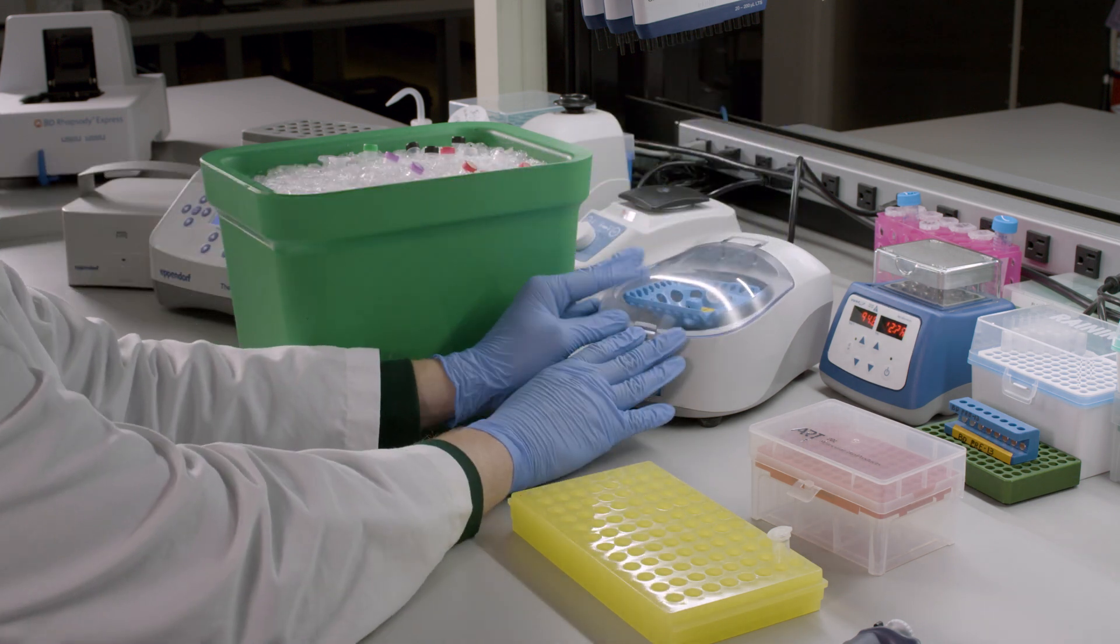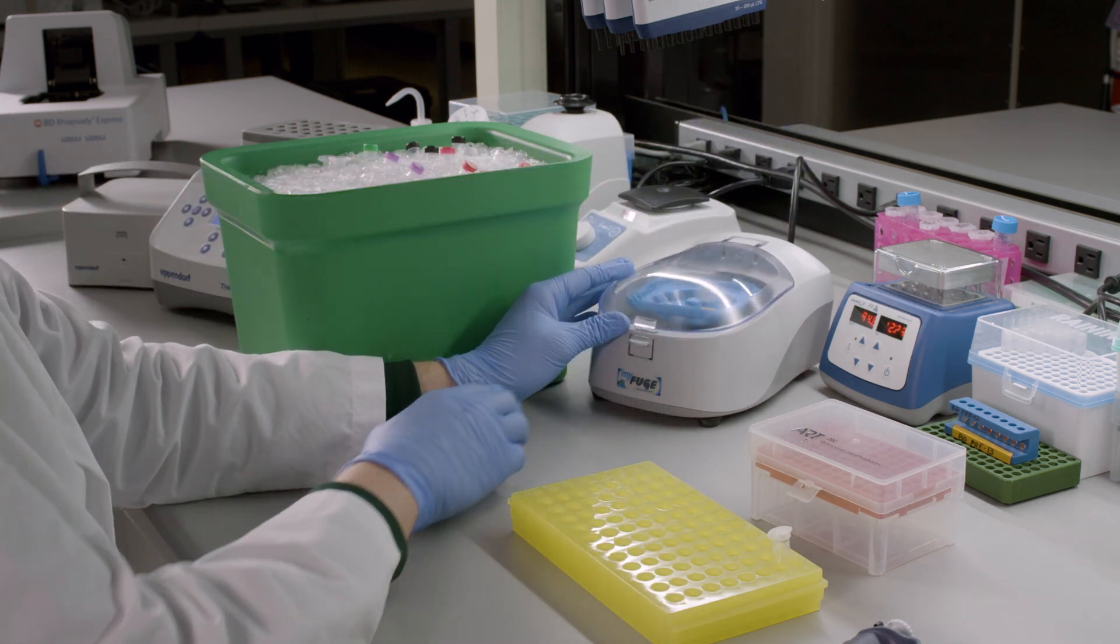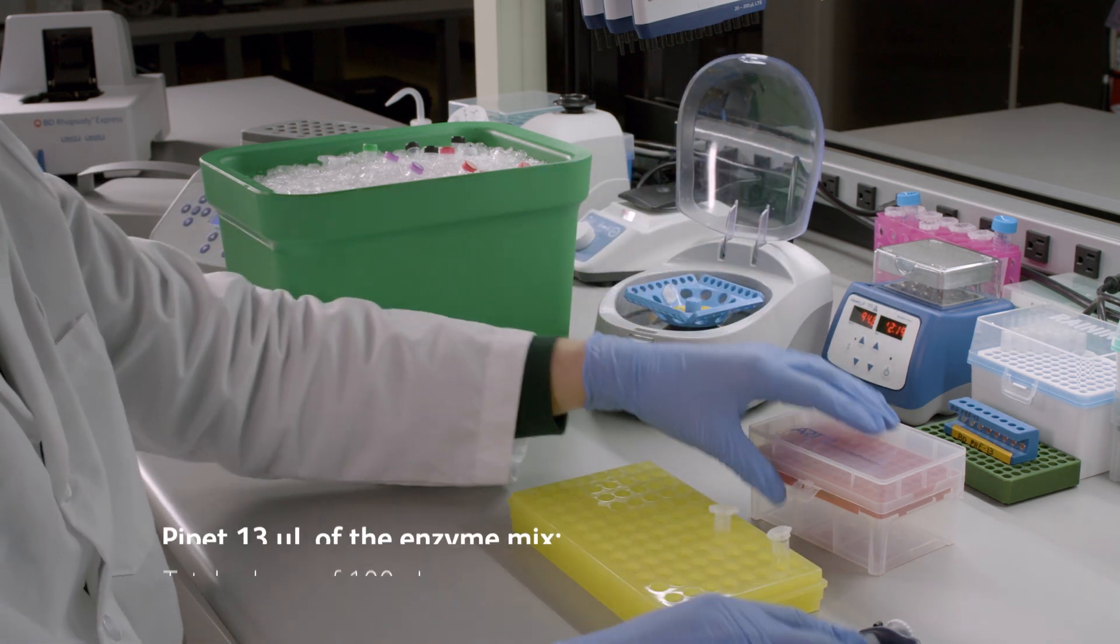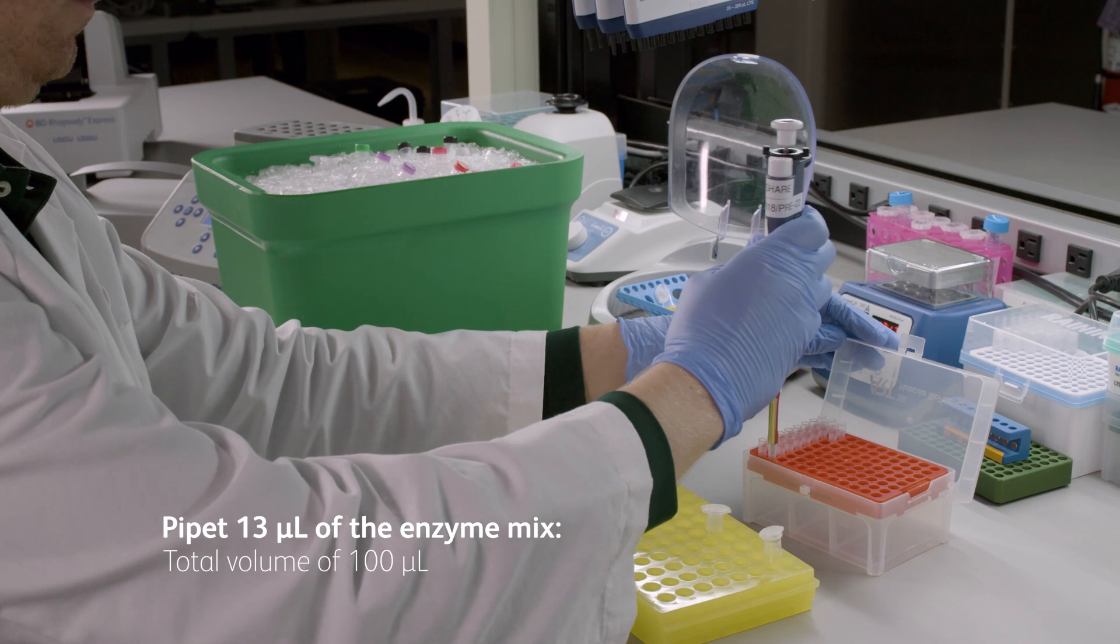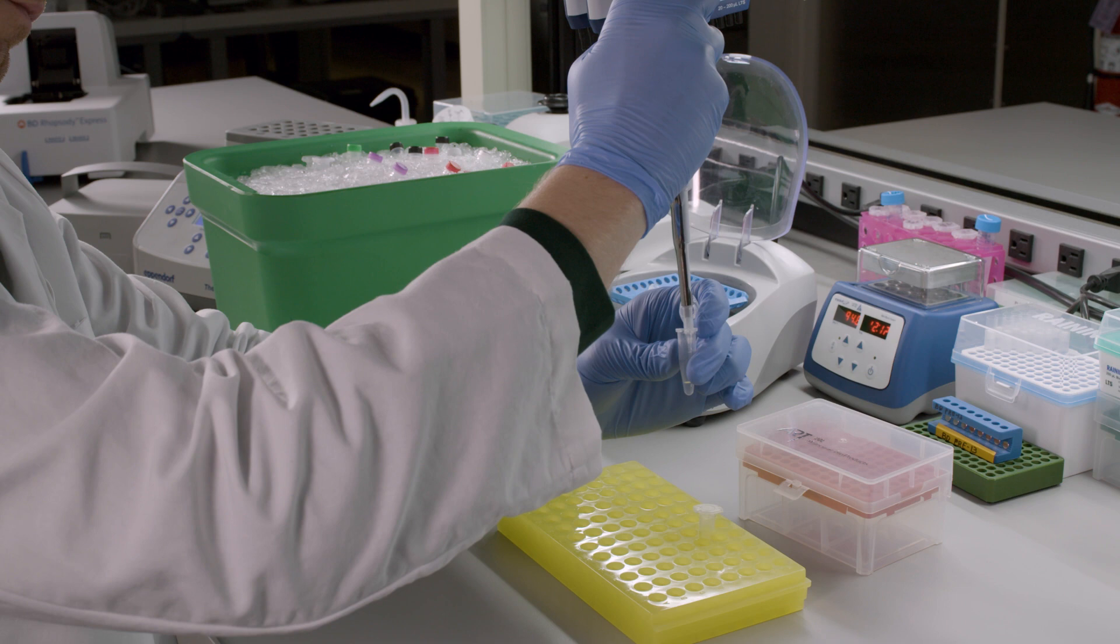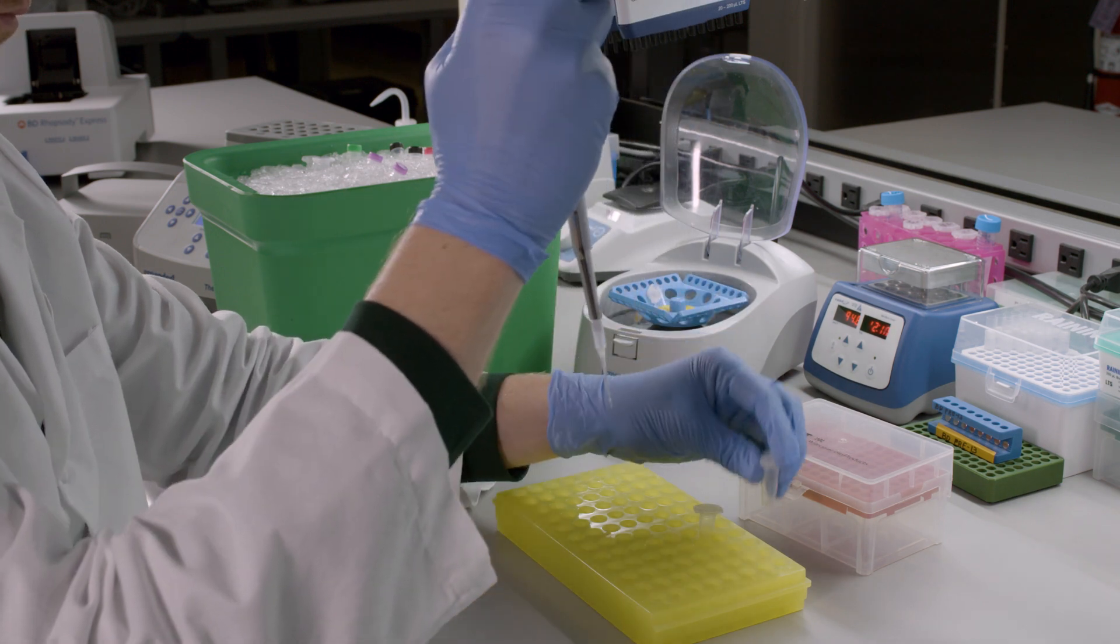After the final incubation step, briefly centrifuge the tube while keeping it at room temperature. Then, take the tube and pipette 13 microliters of the enzyme mix for a total volume of 100 microliters. Keep this tube at room temperature until you are ready for the next step.